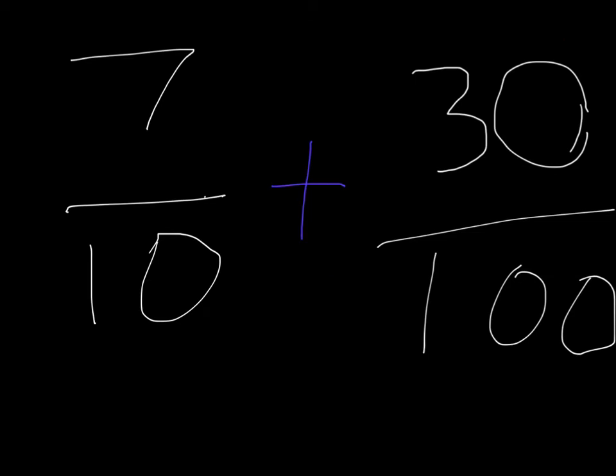7/10 plus 30/100. First you have to add the 0 to your 7. And then whatever you do to your numerator, you have to do to your denominator.